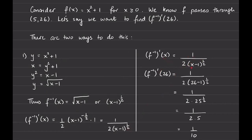Now we plug in 26. So we need the derivative of the inverse at 26: 1 over 2 times (26 − 1)^(1/2) = 1 over 2 times 25^(1/2) = 1 over 2 times 5 = 1 over 10. So 1/10 is the answer.